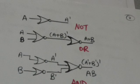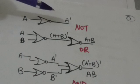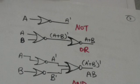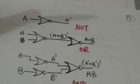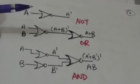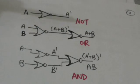A single-input NOR gate acts as a NOT gate. If its input is A, then its output would be the complement of A. So we can implement the NOT logical operation by a NOR gate.